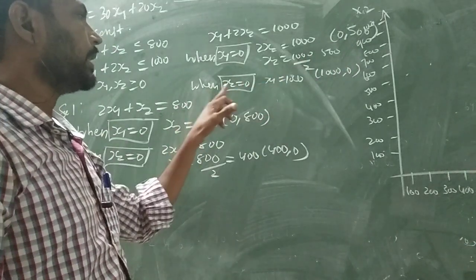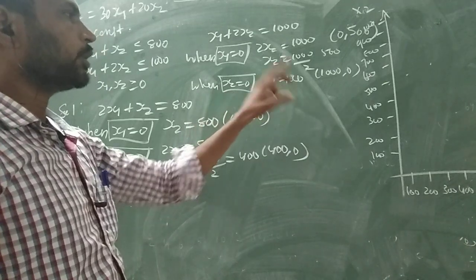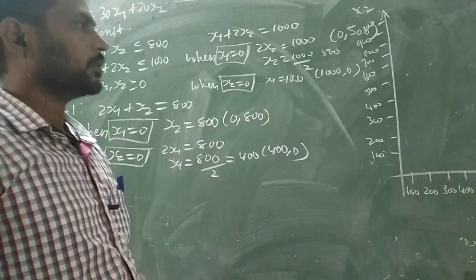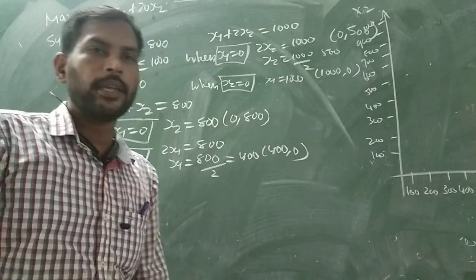In the same equation, when x2 equal to 0, x1 equal to 1000. So the point is (1000, 0).